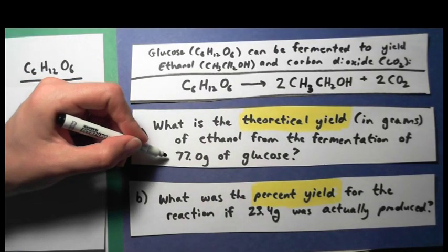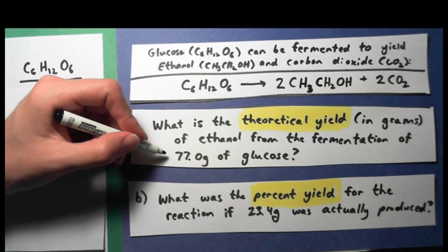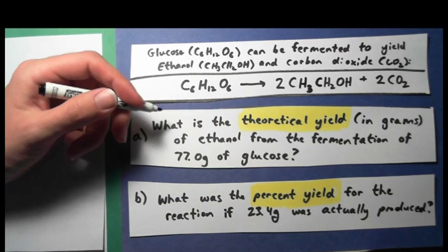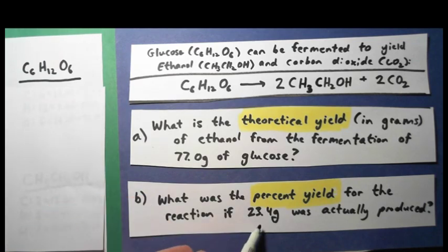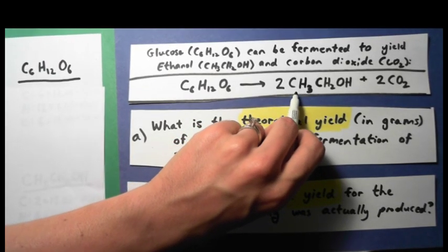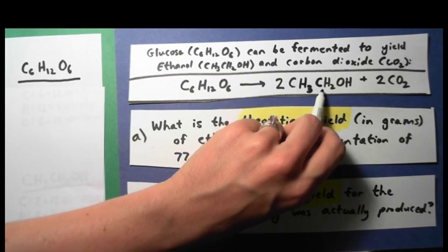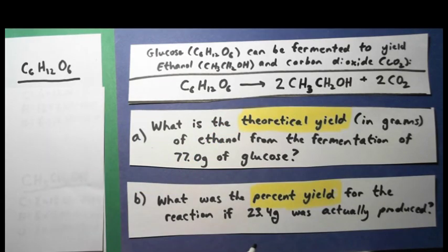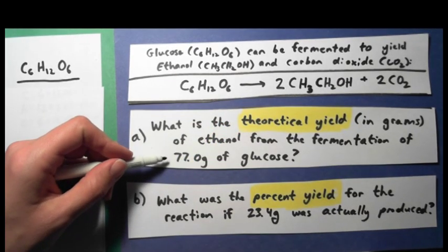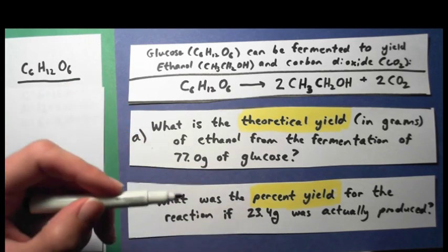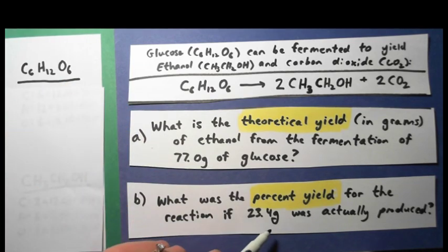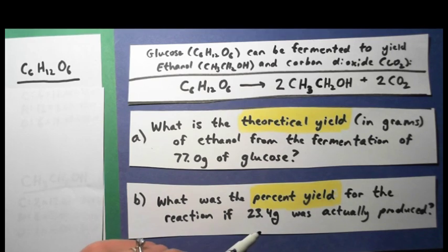I'm doing a reaction where I have 77 grams of glucose and I'm fermenting that glucose to form carbon dioxide and ethanol. I actually do the experiment and I get 23.4 grams of ethanol — ethanol is CH₃CH₂OH. So I take 77 grams of glucose, allow it to react, and form 23.4 grams of ethanol. And I want to know: was that a good reaction? What was the percent yield?